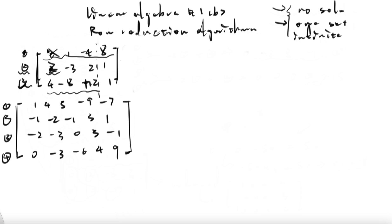So let's look at the first matrix here. This is the problem I left from the last video that I didn't talk about. Basically, for the solutions to this set of matrix, there are three possible outcomes. The first outcome is that there is no solution at all. The second one is there is probably one set of solution. And the third one is that there are infinite sets of solution.